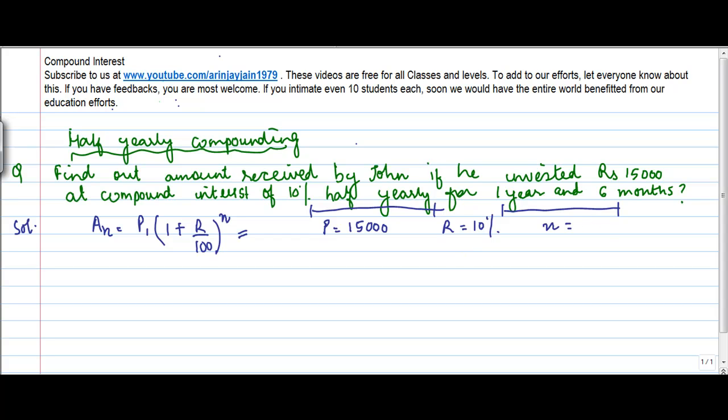So one and a half year. Now if you remember, I told you that this r or the rate of interest has to be annual. But because the compounding has to be done half yearly, in such cases what do we do?